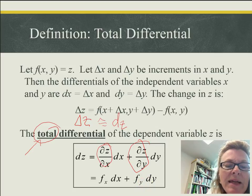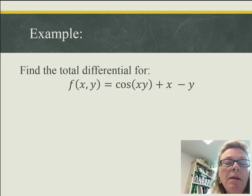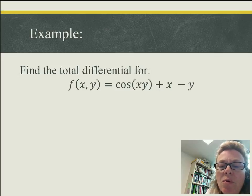So let's go ahead and look at an example of finding the total differential of a particular function. So what I have here is the function f of x and y equals cosine xy plus x minus y. And down here in the corner, we have that form for the total differential. And notice for this form that I need both partial derivatives of my function.